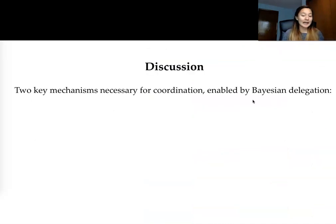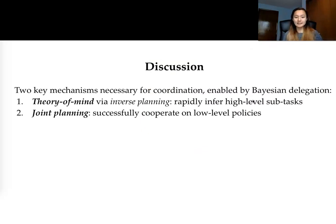So that concludes our work and on to discussions now. There are two main mechanisms that are necessary for coordination. One is theory of mind via inverse planning, being able to rapidly infer high level subtasks of other agents. And the other part is joint planning, being able to successfully coordinate on the low level.